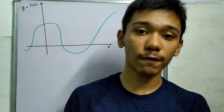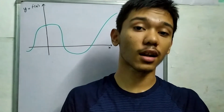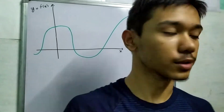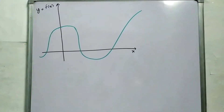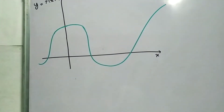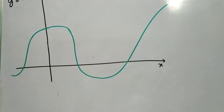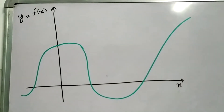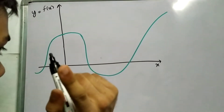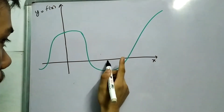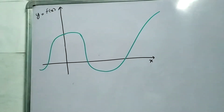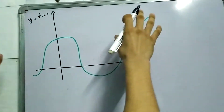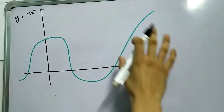Hello there. Today we'll be generalizing slopes to any arbitrary function. Here is this function — it looks very random. By function, I mean there's only one value of y for each value of x. That's the standard definition. And the function is nice and smooth.